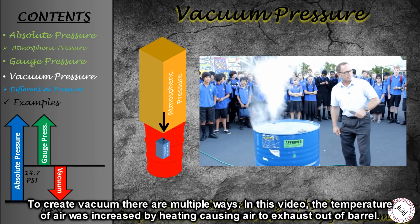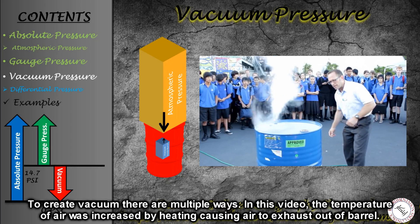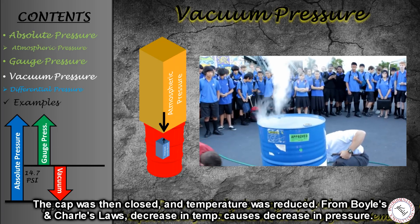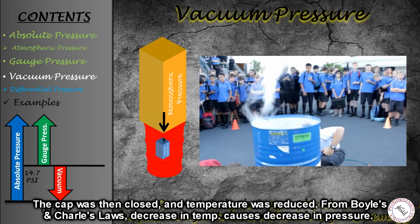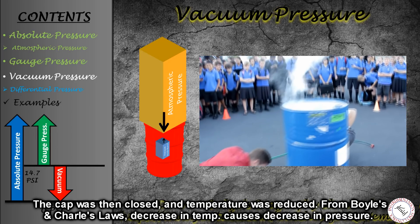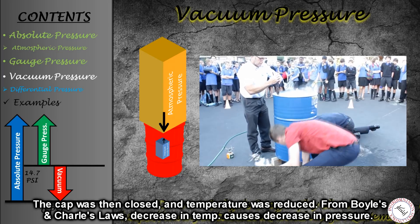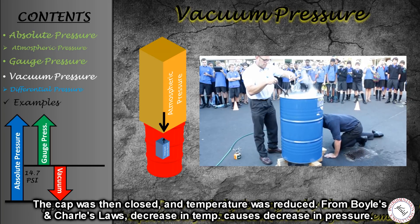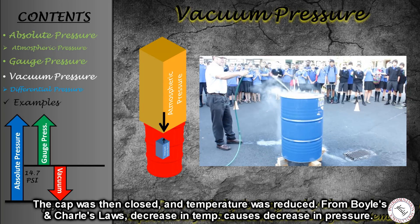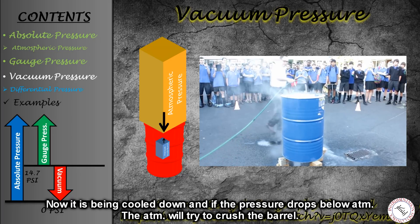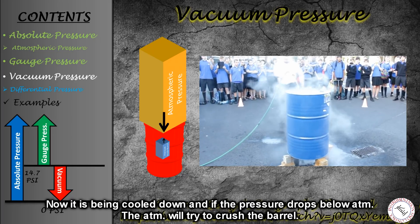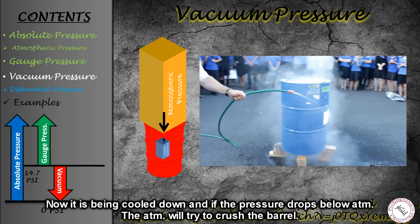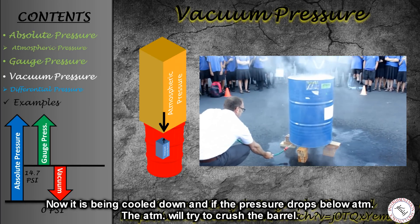In this video, the method used was: the barrel was heated, causing the air inside to expand to high temperature and pressure. Then the cap was opened to let the hot air out, and quickly closed tightly. As the temperature reduced suddenly, the pressure inside also dropped. As the pressure went below atmospheric, the outside atmospheric pressure crushed the barrel.